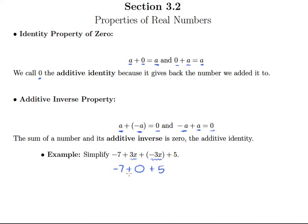Now I have negative seven plus zero. That looks like the identity property of zero, which says if I'm taking negative seven plus zero, that's just the same as negative seven. Then finally, negative seven plus five gives us negative two.